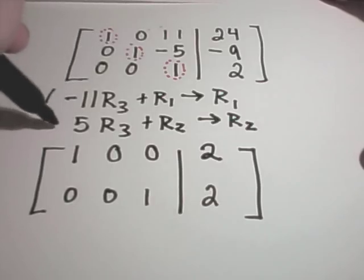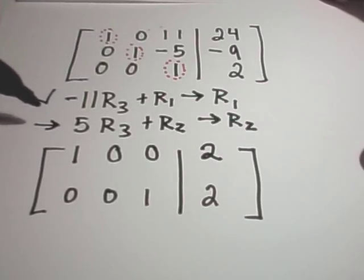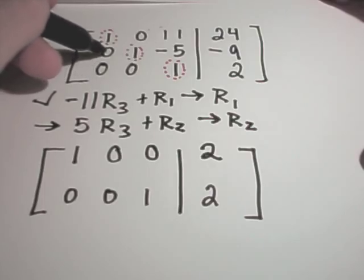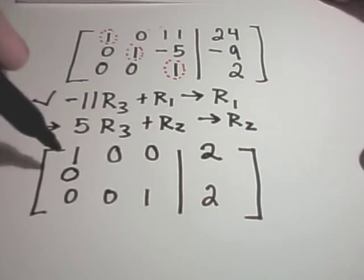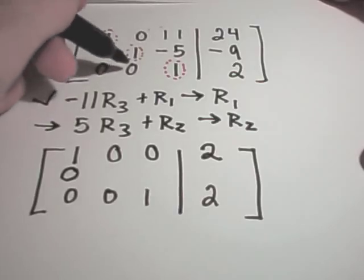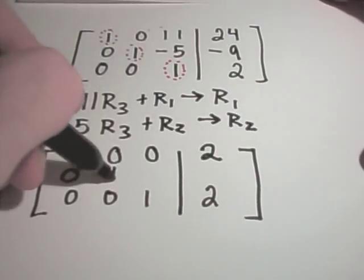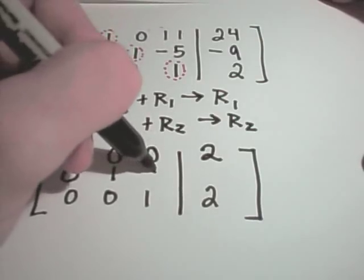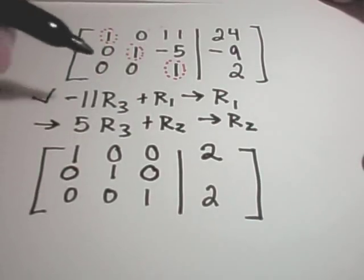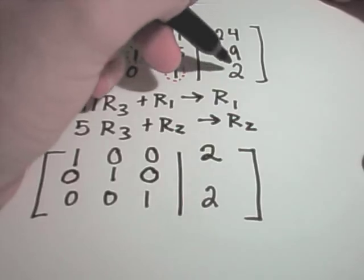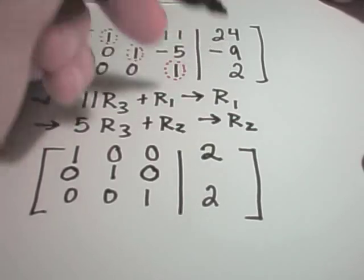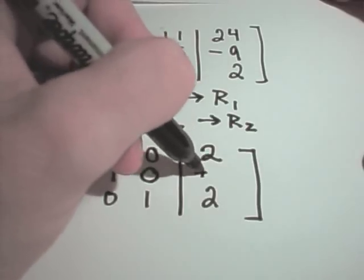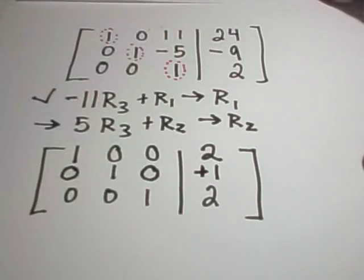And now I'll take, I'll do the second step. So if I take 5 times 0, I'm multiplying row 3 and add it to row 2, I'll still have a 0. If I take 5 times 0 and add it to 1, well, that's still 1. If I take 5 times 1 and add that to negative 5, ta-da, I get my 0. And if I take 5 times 2, that's 10, and add that to negative 9, it looks like that'll give me positive 1.